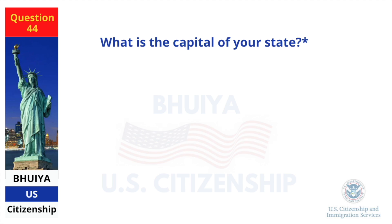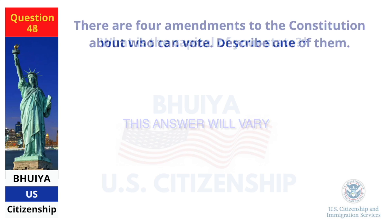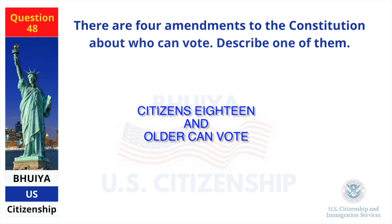What is the capital of your state? This answer will vary. There are four amendments to the Constitution about who can vote — describe one of them. Citizens 18 and older can vote.